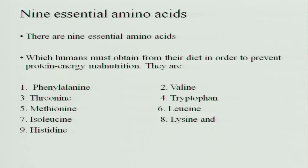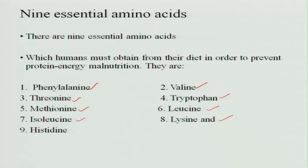The 9 essential amino acids which humans must obtain from the diet in order to prevent protein energy malnutrition are: phenylalanine, valine, threonine, tryptophan, methionine, leucine, isoleucine, lysine, and histidine.